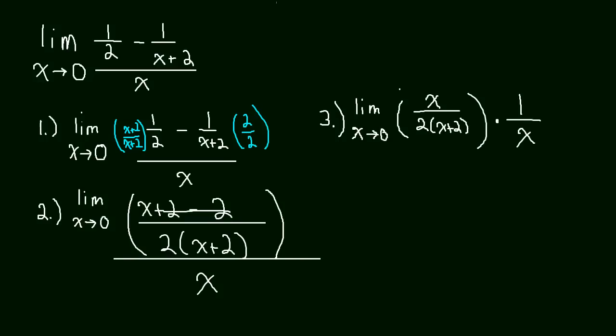And now, since these are being multiplied, we can divide those x's out to 1. And let's clean things up here. So we're going to be left with the limit as x approaches 0 of 1 over 2 times x plus 2.